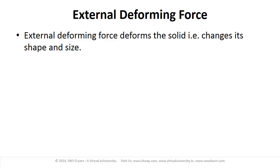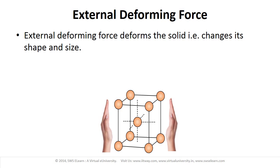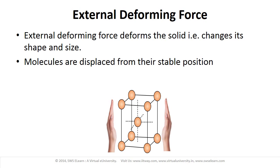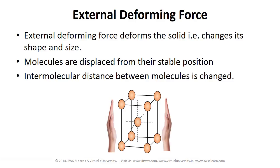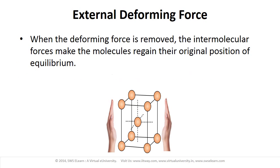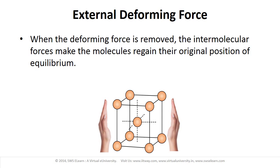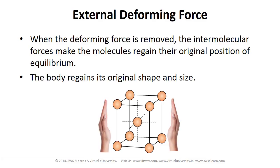When an external deforming force is applied to the solid, the solid is deformed — that is, its shape and size or both are changed. In this situation, the molecules are displaced from their stable position and the intermolecular distance between molecules is changed. When the deforming force is removed, the intermolecular forces make the molecules regain their original position of equilibrium, and thus the body regains its original shape and size.